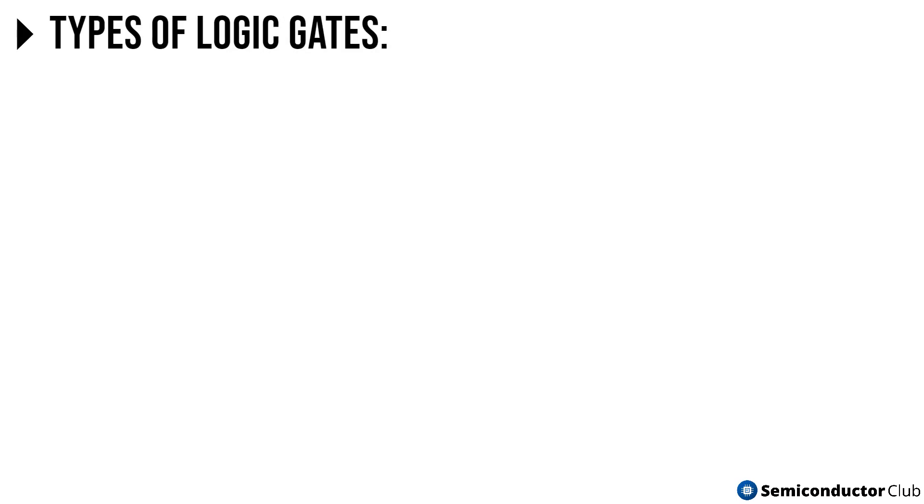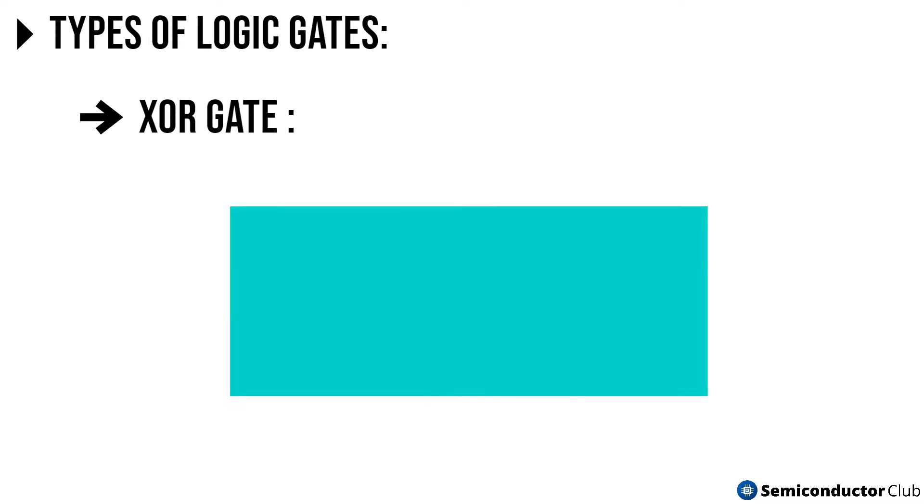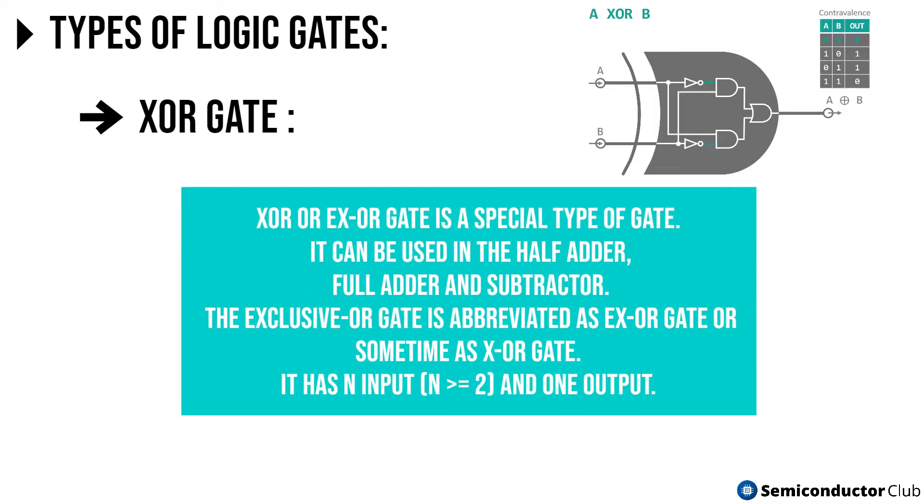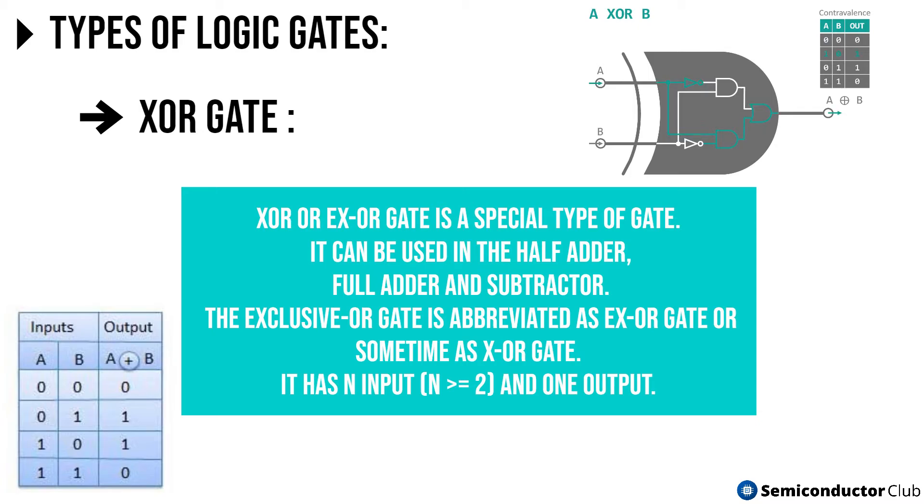Then we have the XOR gate. XOR or EX-OR gate is a special type of gate. It can be used in the half adder, full adder and subtractor. The exclusive OR gate is abbreviated as EX-OR gate or sometime as X-OR gate. It has N input, N greater than equals 2, and one output.